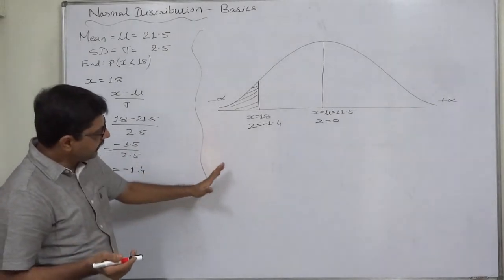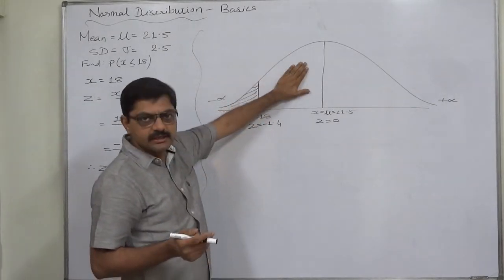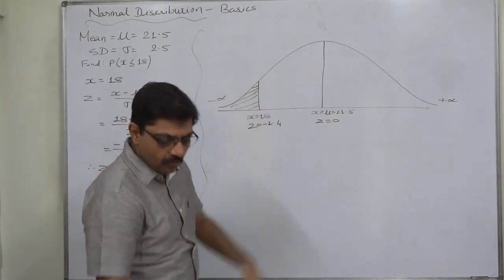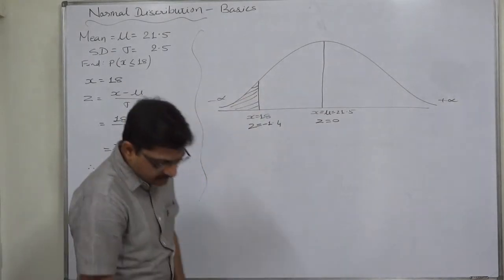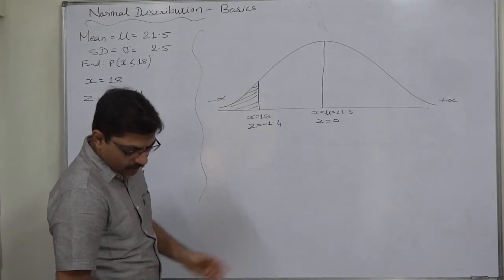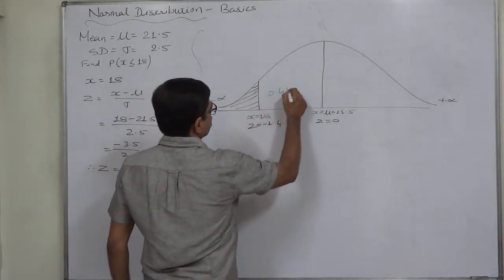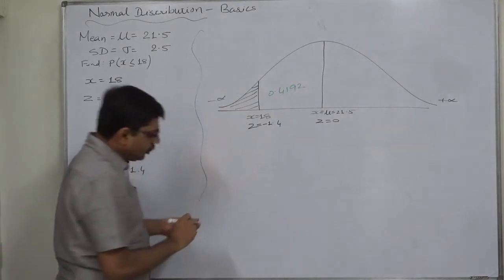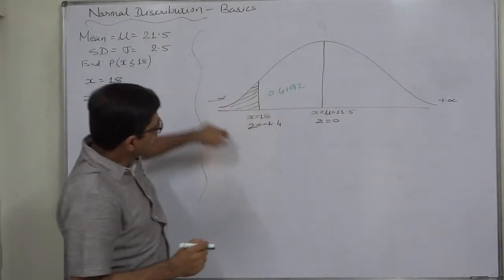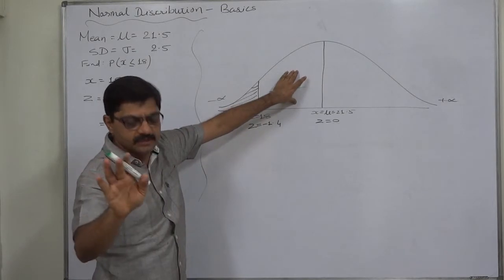From 0.5 area, we are not interested in this much area, so remove it. Now what is the area between z 0 and z 1.4 is 0.4192. That means out of 0.5, the entire left hand side area, we are not interested in this much area.